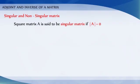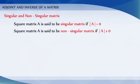Singular and non-singular matrices. A square matrix A is said to be singular if |A| = 0. A square matrix A is said to be non-singular if |A| ≠ 0.